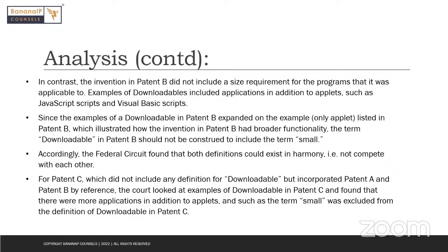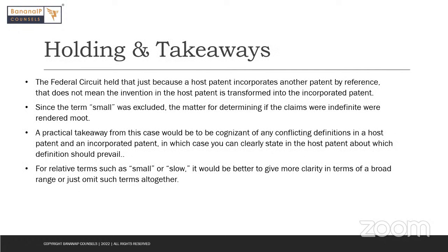Then the Federal Circuit looked at patent C, which had not included any definition for downloadable but had incorporated both patent A and patent B by reference. The court found that even the list of examples in patent C had a much more expansive list of downloadables compared to that in patent A. As such, the Federal Circuit found that the term 'small' should not have been included in the definition of downloadable in patent C. The final holding is that just because a host patent incorporates another patent by reference, that does not mean that the invention of the host patent is transformed into the incorporated patent. The Federal Circuit did not address the issue of indefiniteness because since the term 'small' was excluded, that matter was now moot.